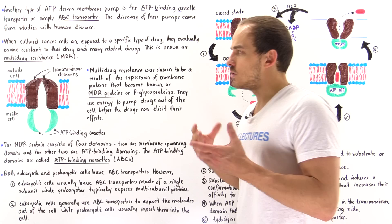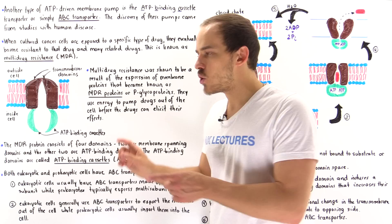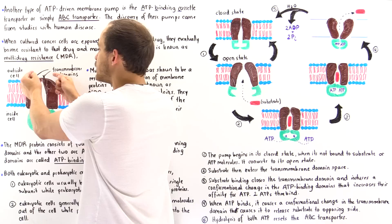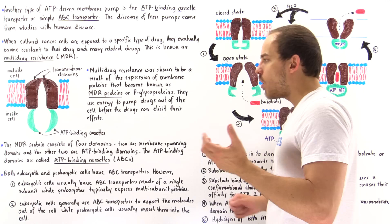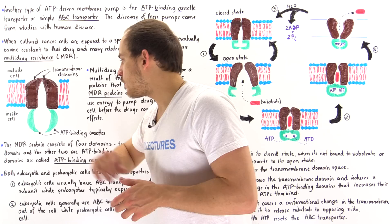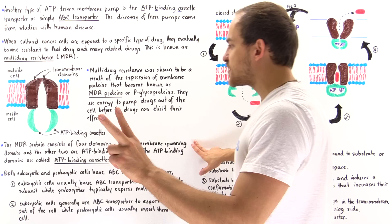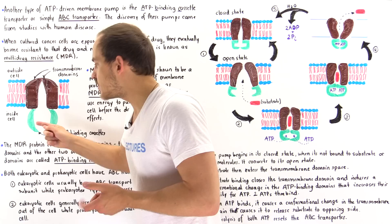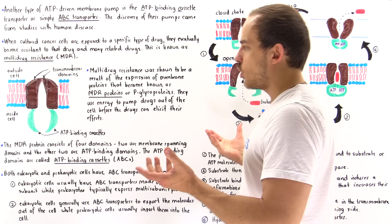The MDR protein consists of four domains. Even though it is a single polypeptide chain, it contains four different domains: two transmembrane domains and two ATP binding domains, also known as ATP binding cassettes. The two membrane-spanning domains are shown in brown, and the two ATP binding cassette domains are where ATP will actually bind.